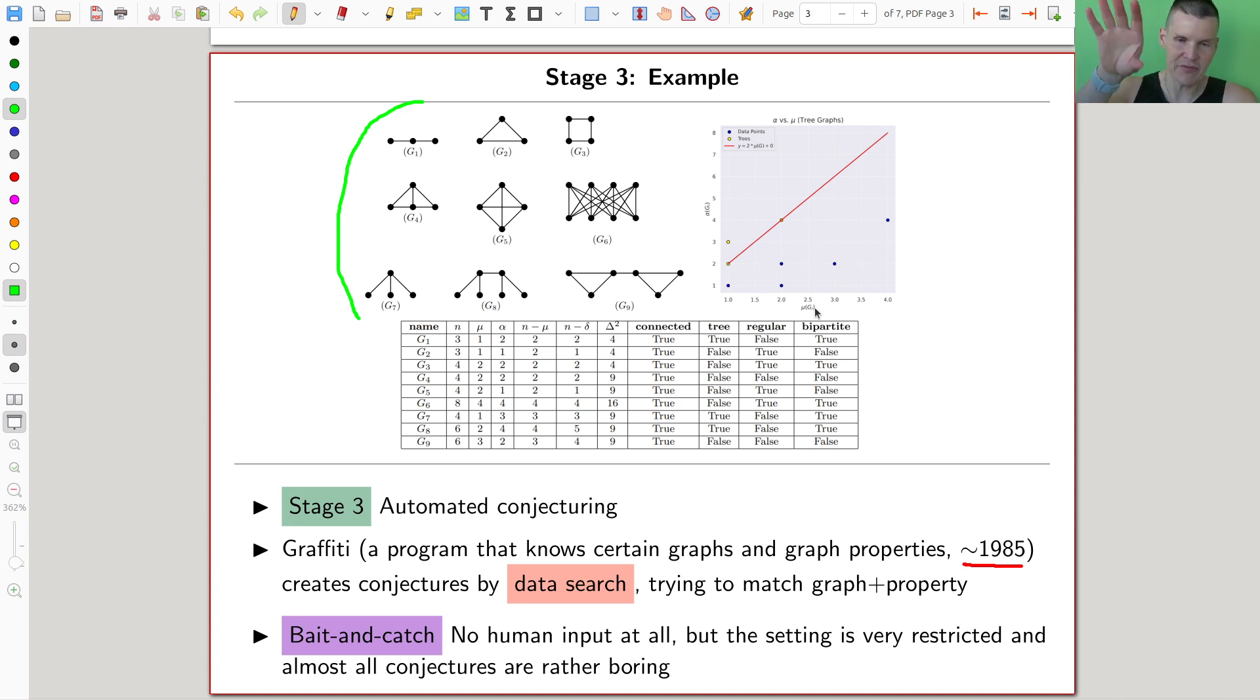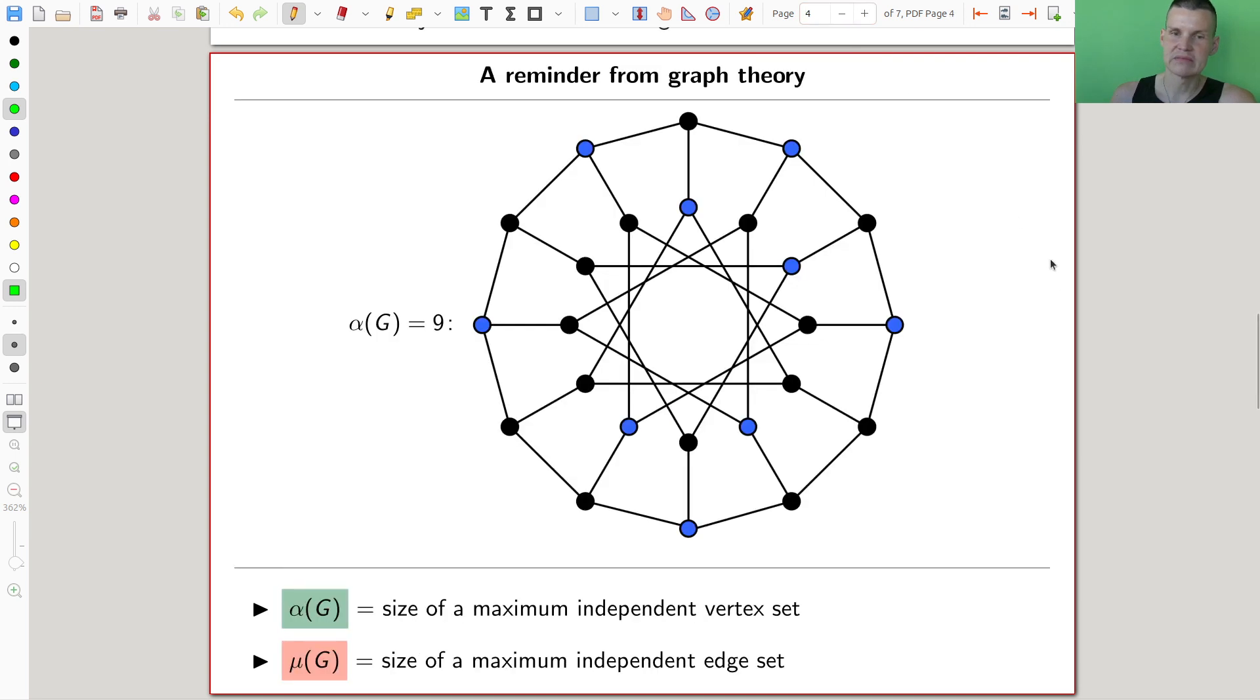Yeah, so you gave it some graphs, some properties of graphs, and it just mixes everything itself together. And this is what I would call, or people call, automated conjecturing. And it has been beefed up since 30 years ago, but it's essentially the same idea still. Just whatever, the databases get better, the algorithms are smarter, or something like this.